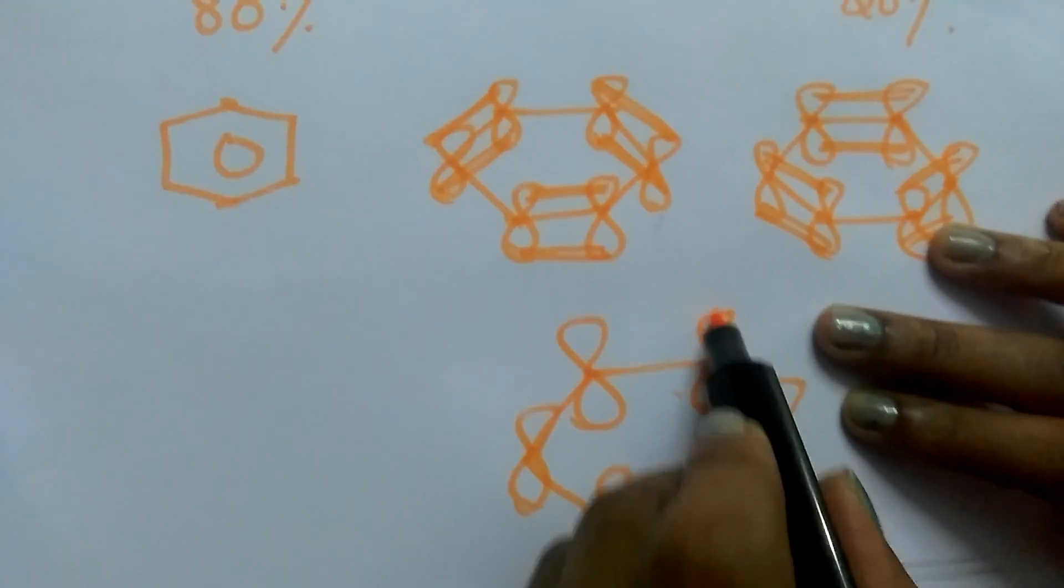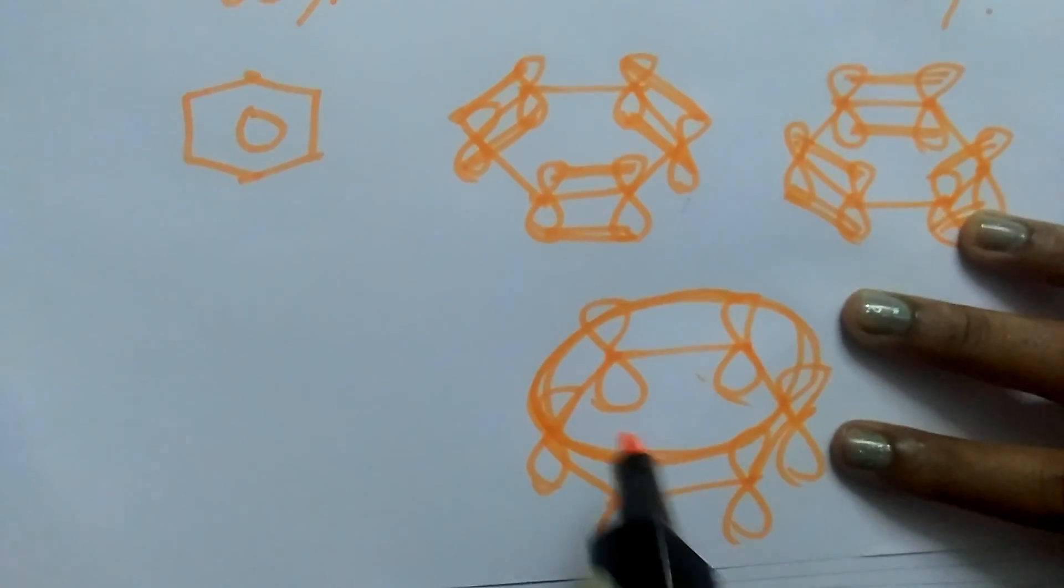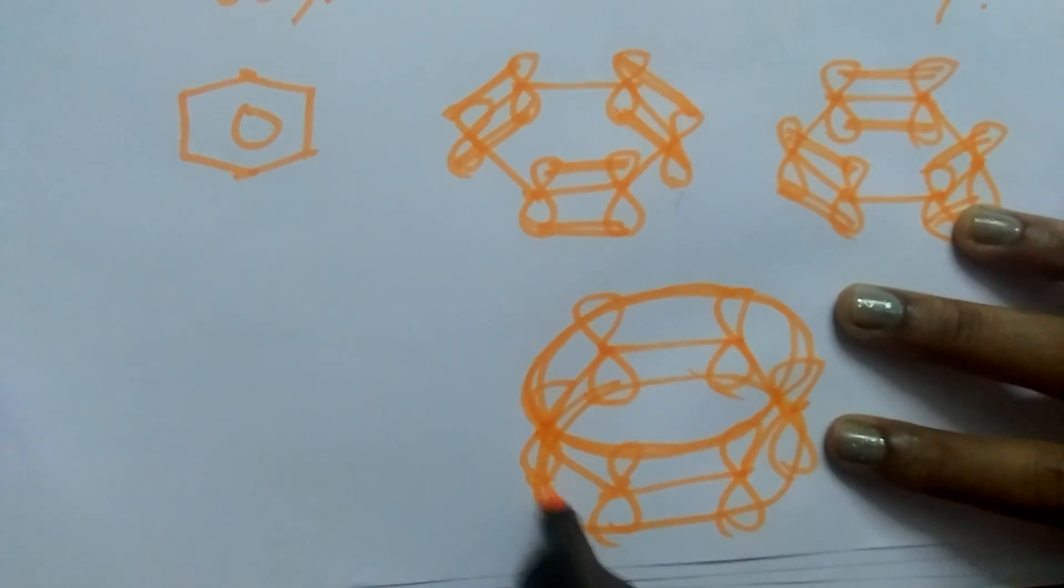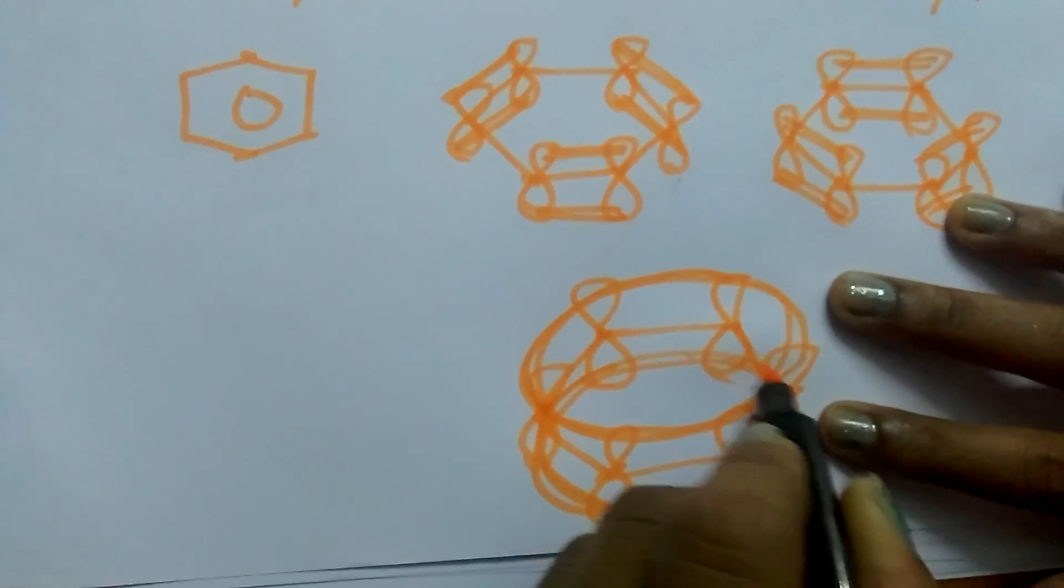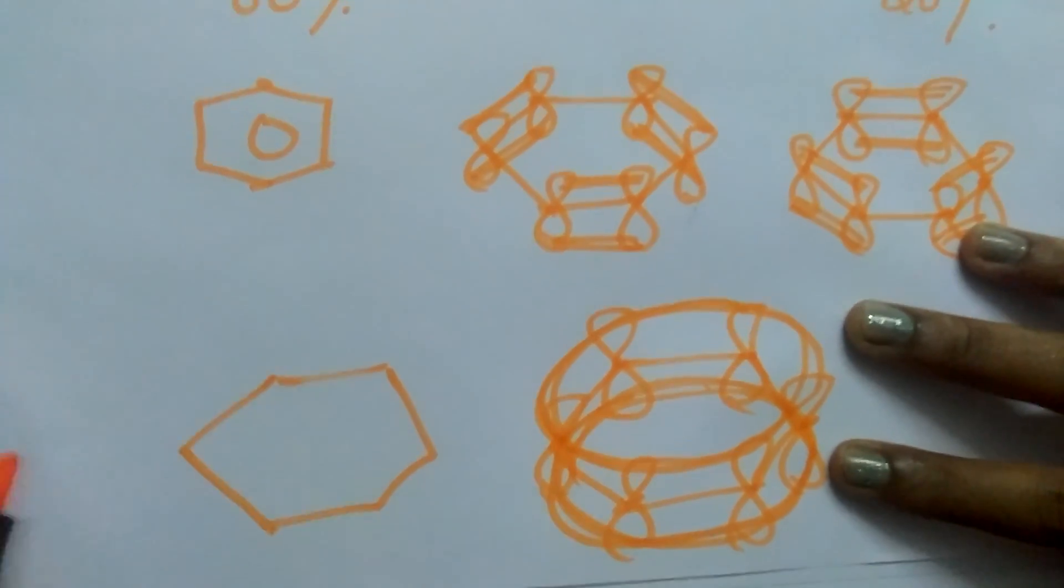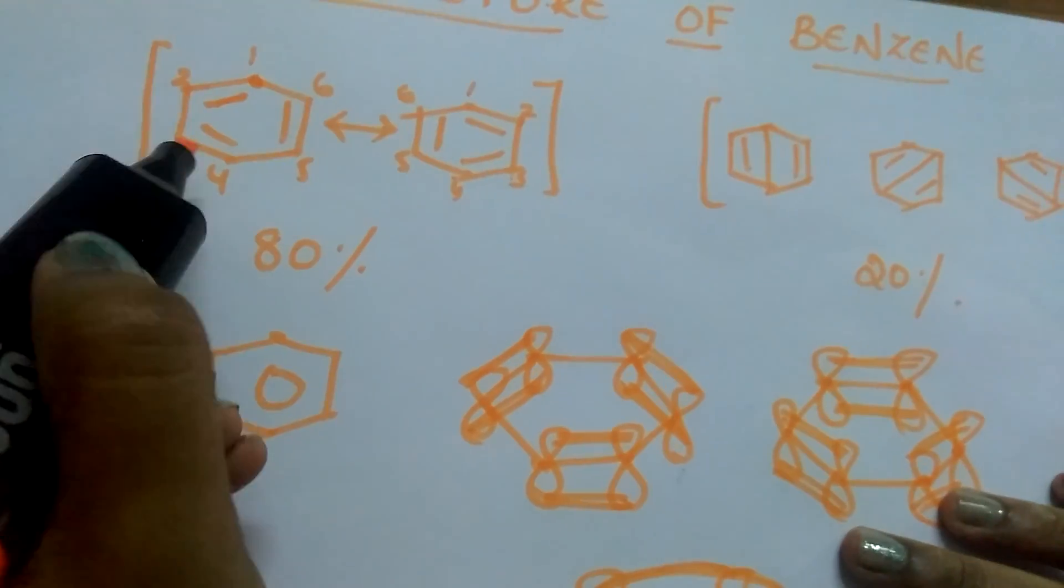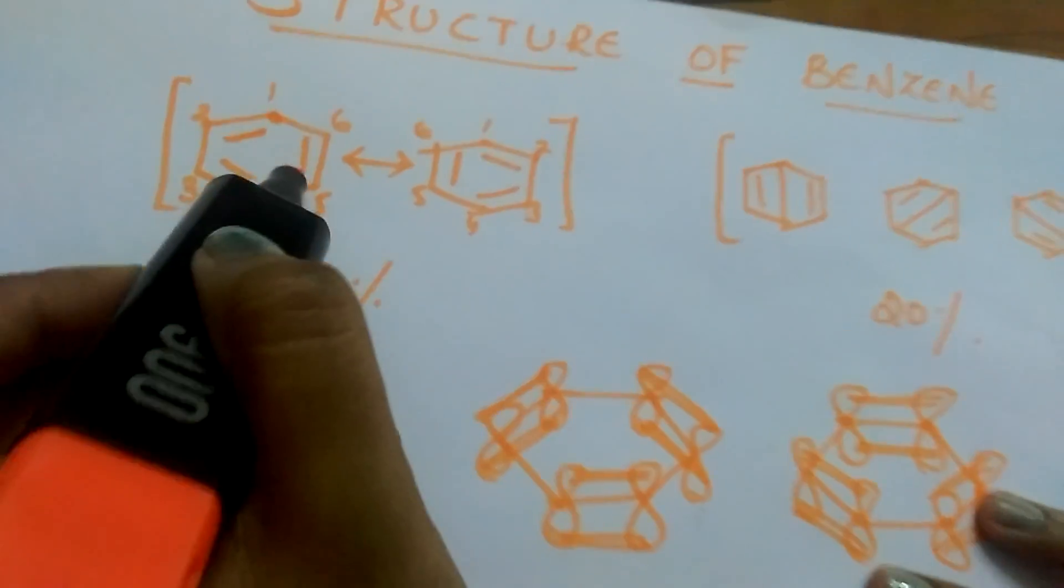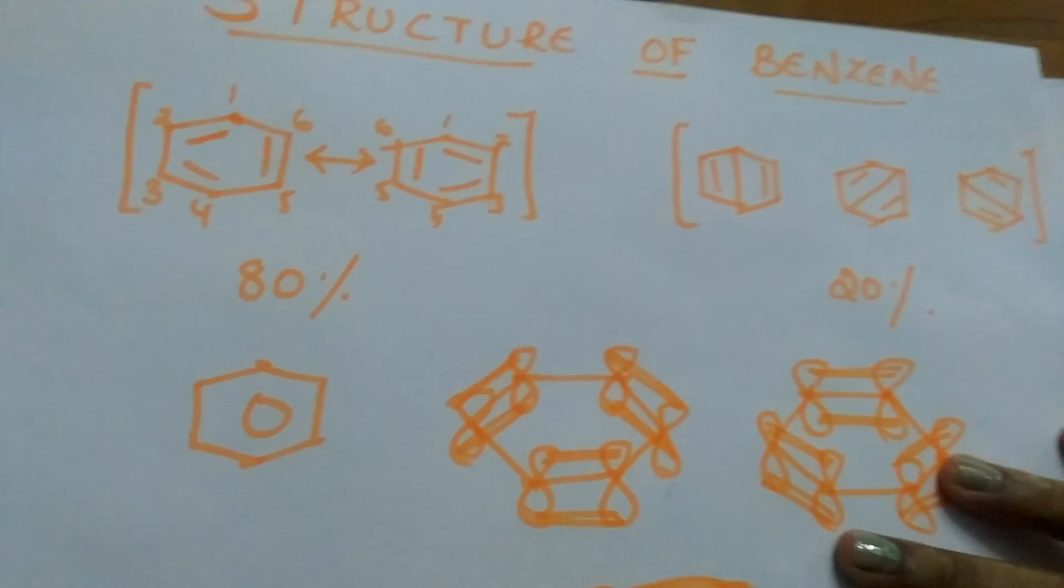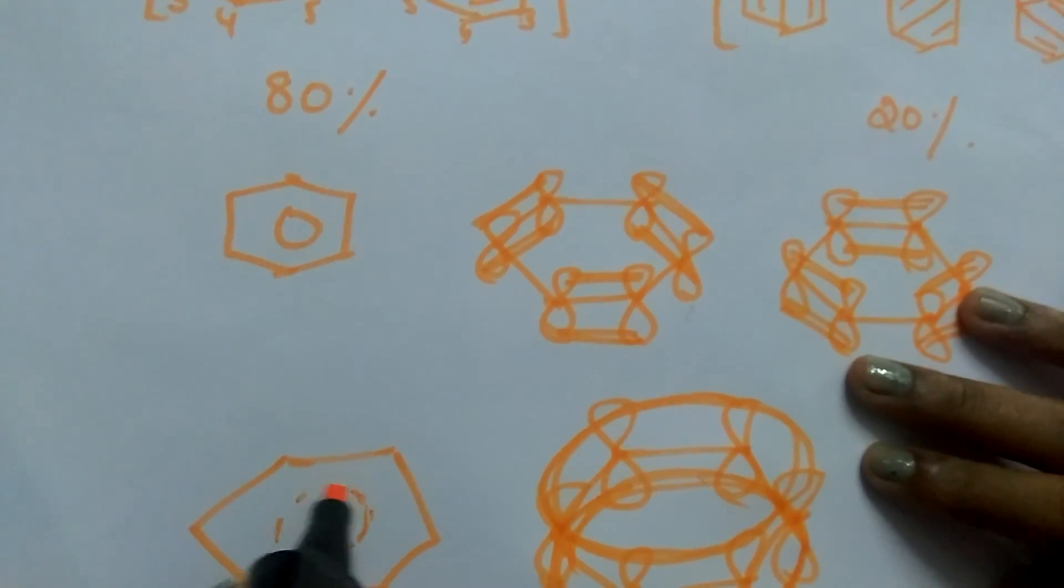See this, these p-orbitals are overlapping like this. This means the delocalization of electrons are taking place in such a way that the pi electrons are not fixed just between 1 and 2 carbon, 3 and 4 carbon, or 5 and 6 carbon. Here the pi electrons are delocalizing between all the carbon atoms.